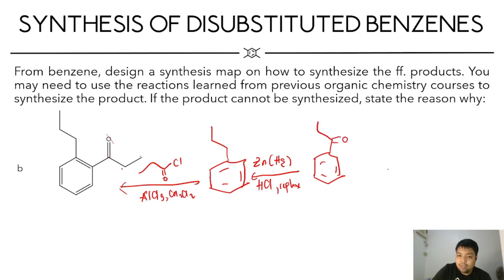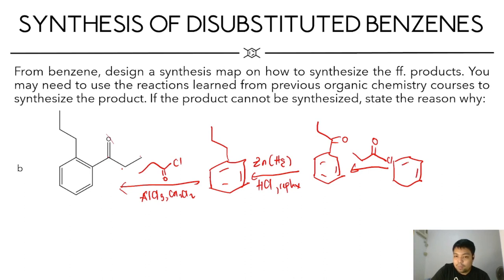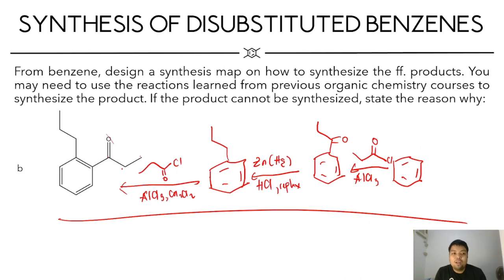This is the resulting acyl chloride. Then, after the Clemmensen reduction, we have the Friedel-Crafts acylation. Again, this is a three-carbon chain that we added to our aromatic ring. This gives you the product. This is your synthesis route for this example.